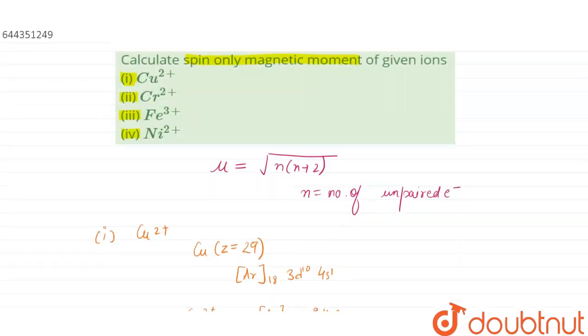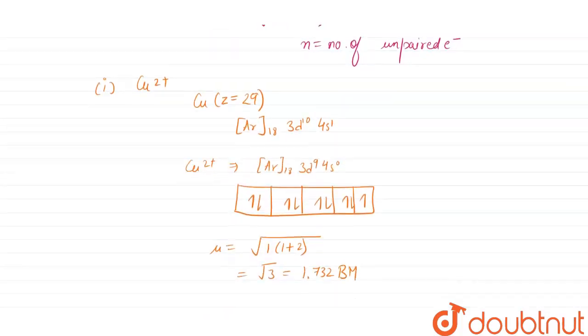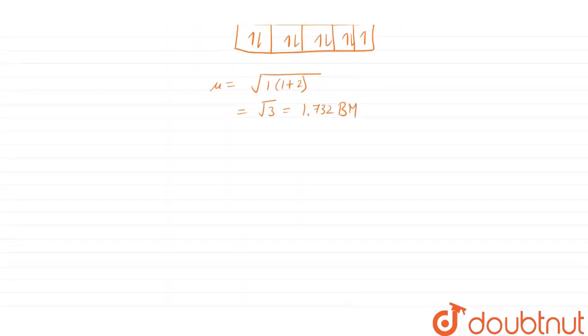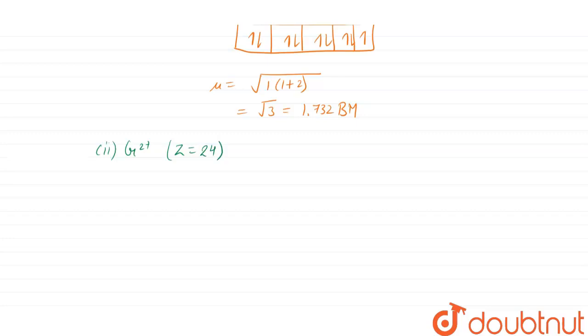Next is Cr²⁺. Let us calculate for chromium 2 plus. Chromium has atomic number equals to 24, and its electronic configuration is [Ar]₁₈ 3d⁵ 4s¹.